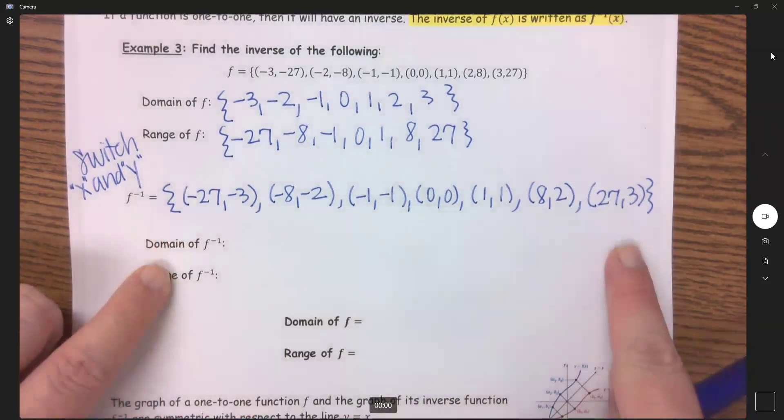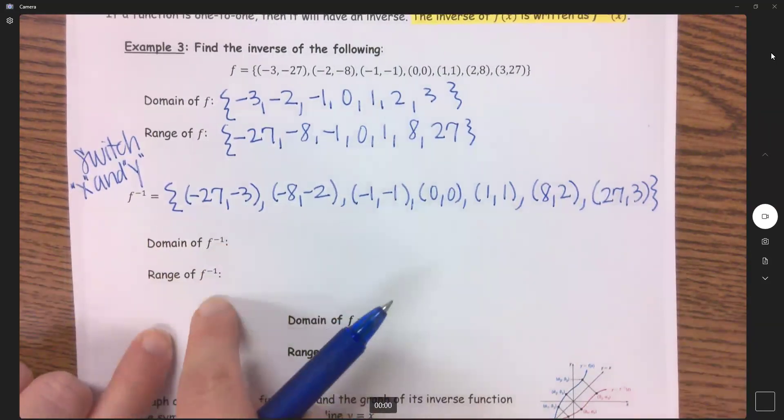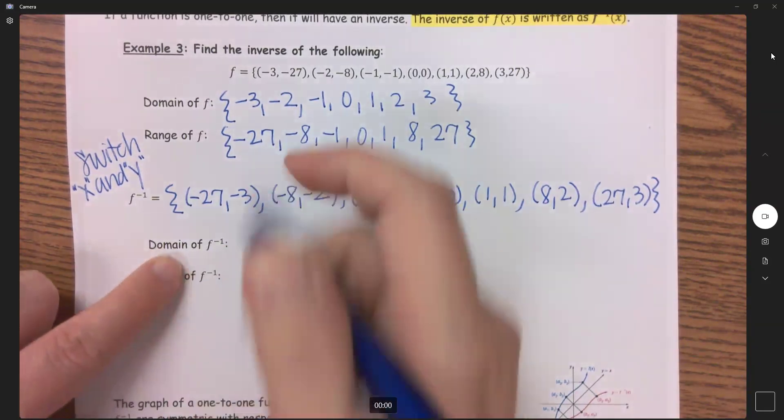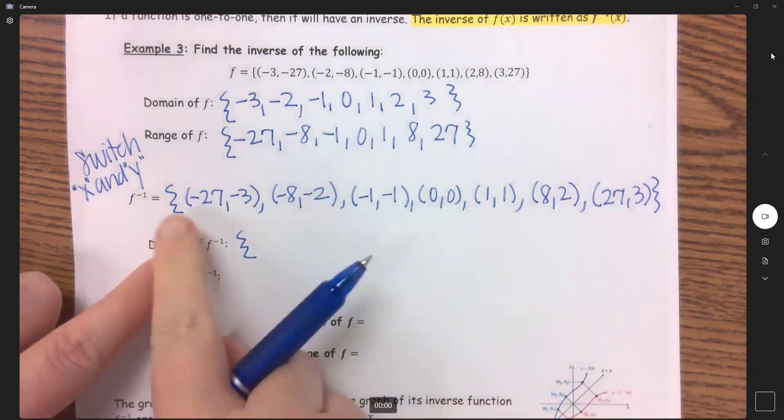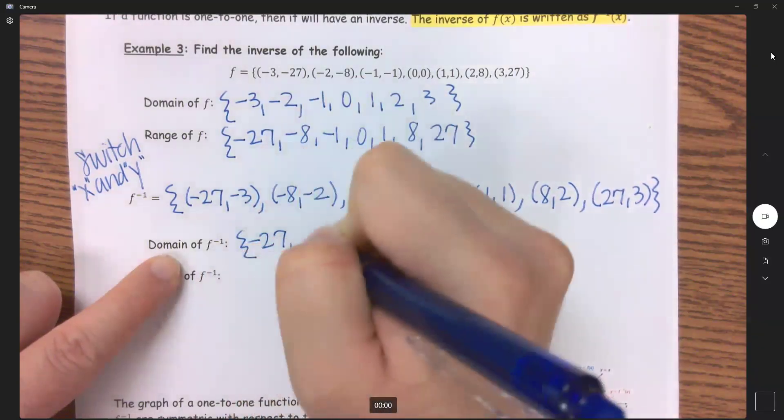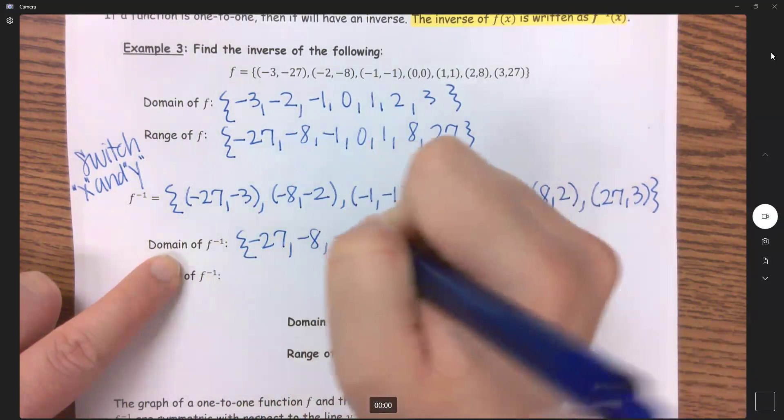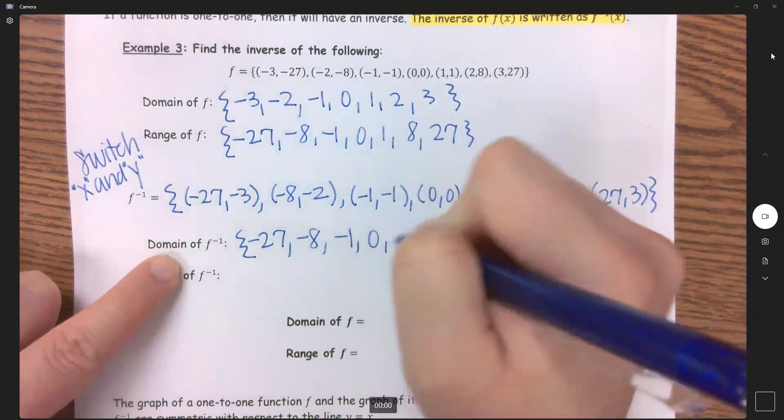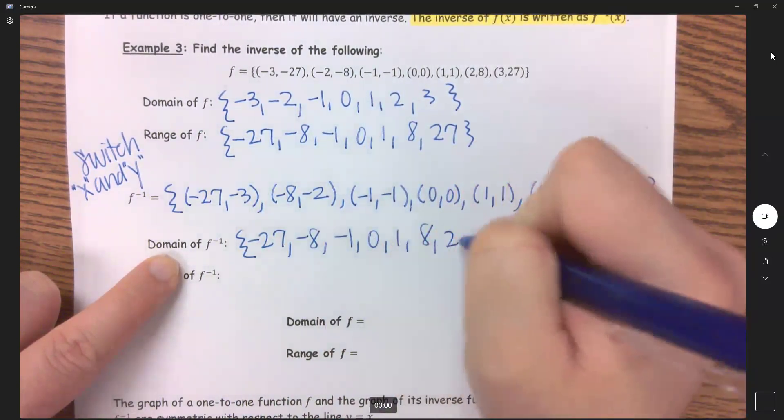So now from this inverse, what is my domain and what is my range? Well, my domain, all of my x coordinates. So we have negative 27, negative 8, negative 1, 0, 1, 8, 27.